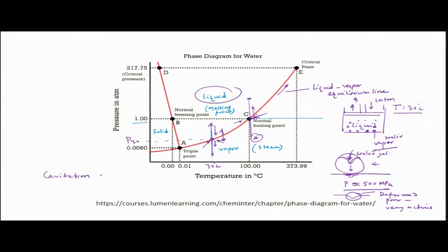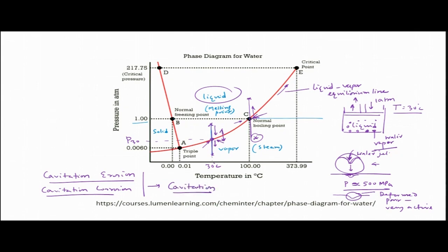This particular degradation - repeated bubble formation, bubble collapse, and the lateral damage of the material - is basically termed as cavitation erosion or cavitation corrosion, and in many cases it is simply called cavitation. We will talk about cavitation in greater detail in our next lecture. Till then, thank you.